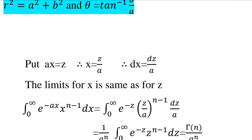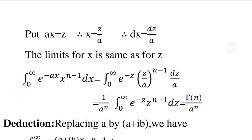The integral from 0 to infinity of e raised to minus ax times x raised to n minus 1 dx becomes, after substitution, 1 by a raised to n times the integral from 0 to infinity of e raised to minus z times z raised to n minus 1 dz.